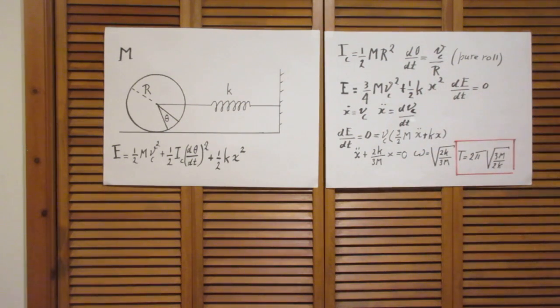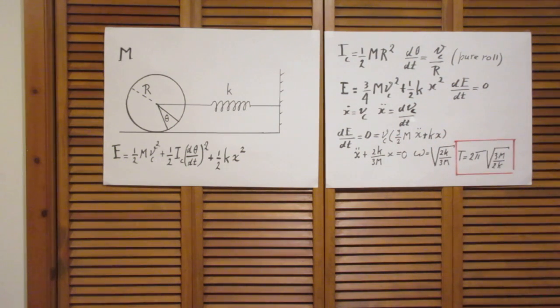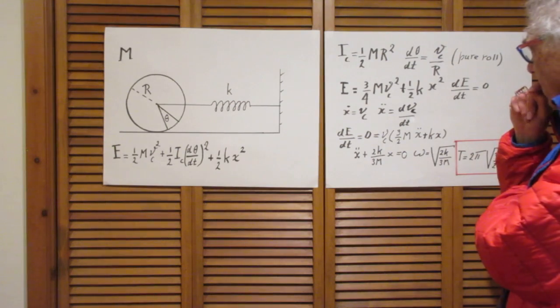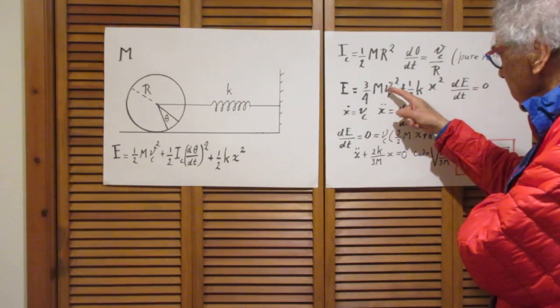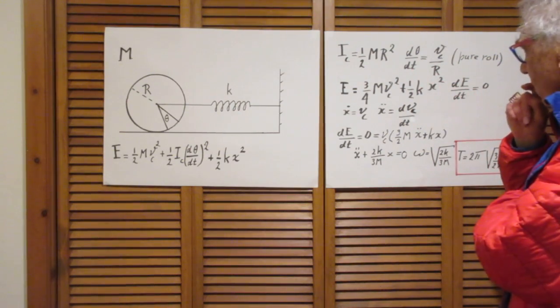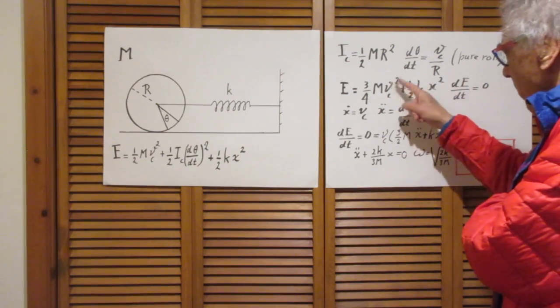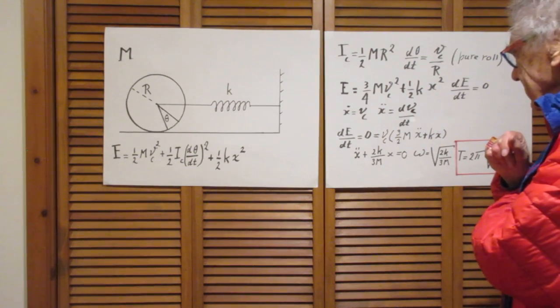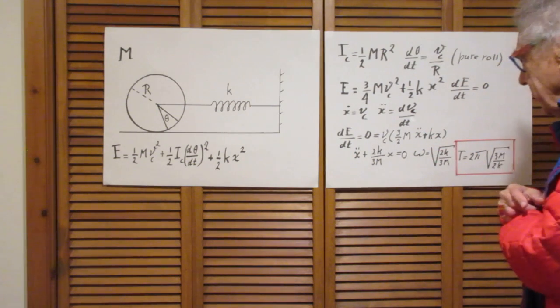So we take the dE/dt and we make that zero. If you take that equation and you take the dE/dt, you'll find this result. If you take the derivative of v squared, then you get 2 vc times v dot. Here you see the vc. But v dot is also x double dot. v dot is dv/dt is x double dot. So that's why you see an x double dot here.